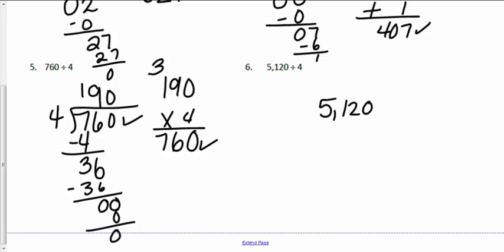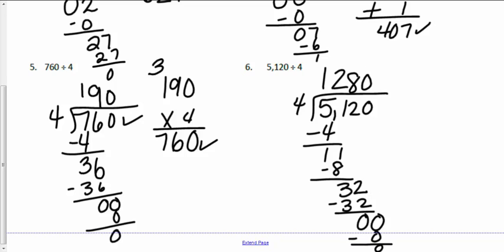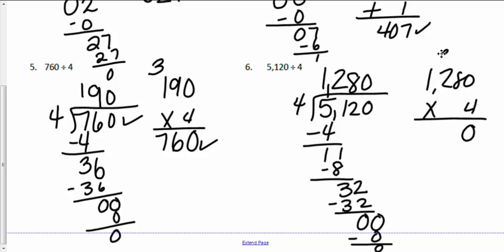Next: 5,120 divided by 4. Five divided by 4 is 1 remainder 1. I bring down the 1 hundred: 11 hundreds divided by 4 is... that's going to be... I bring down the tens. 32 divided by 4 is 8; 8 times 4 is 32, leaving zero tens. I bring down the zero ones — I'm going to put a zero here. Four goes into zero zero times; zero times 4 is zero. So my answer is 1,280. I check: 1,280 times 4 — zero times 4 is 0, 8 times 4 is 32, carry 3; 2 times 4 is 8 plus 3 is 11; 1 times 4 is 4 plus 1 is 5 — giving me 5,120. Answers check.